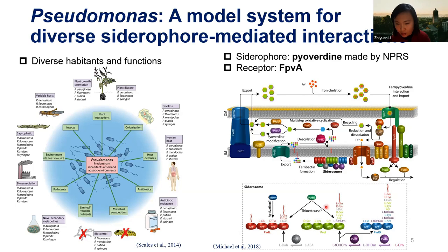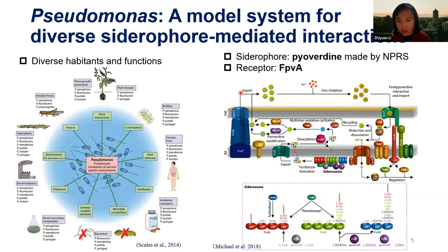Pyoverdine gets produced by a very large enzyme — one of the largest enzymes in microbes. It is highly costly but is used to synthesize this siderophore. It is released to the environment, binds iron to form a complex, then gets recognized and taken back by the receptor FpvA.